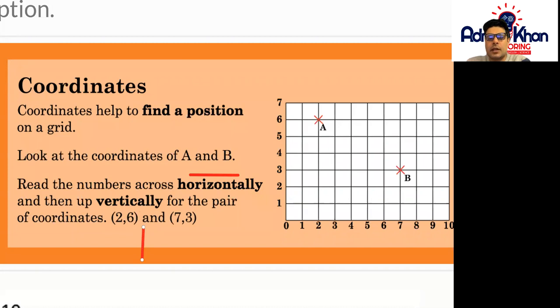So vertical lines are always going from top to bottom or from bottom to top so they're in a straight line and horizontal lines are from left to right.